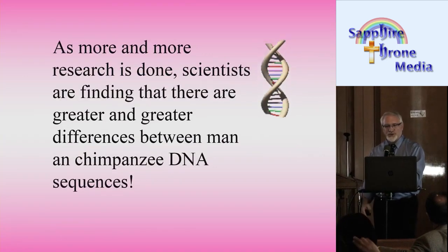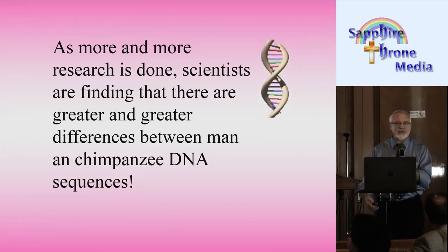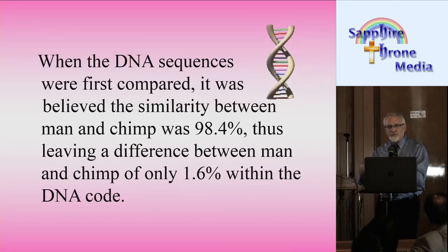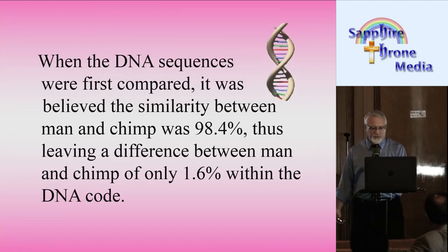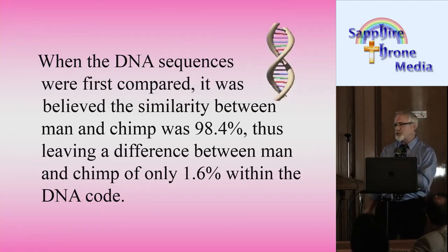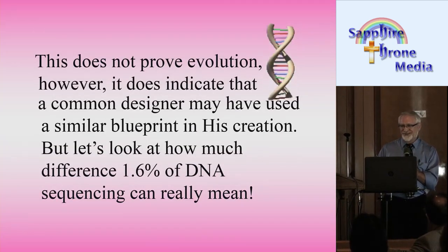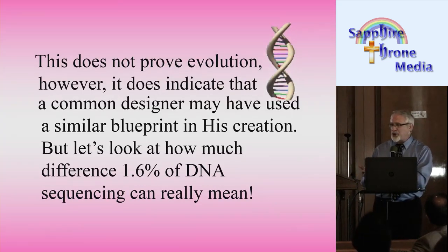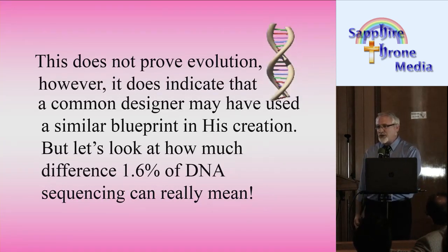As more and more research is done, scientists are finding greater and greater differences between man and chimpanzee DNA sequences. When the DNA sequences were first compared, it was believed that the similarity between chimpanzee and man was 98.4%, leaving a 1.6% difference in the DNA code. While 1.6% doesn't sound like a lot, this does not prove evolution. It does indicate that a common designer may have used a similar blueprint in his creation. But let's look at what 1.6% difference really means.